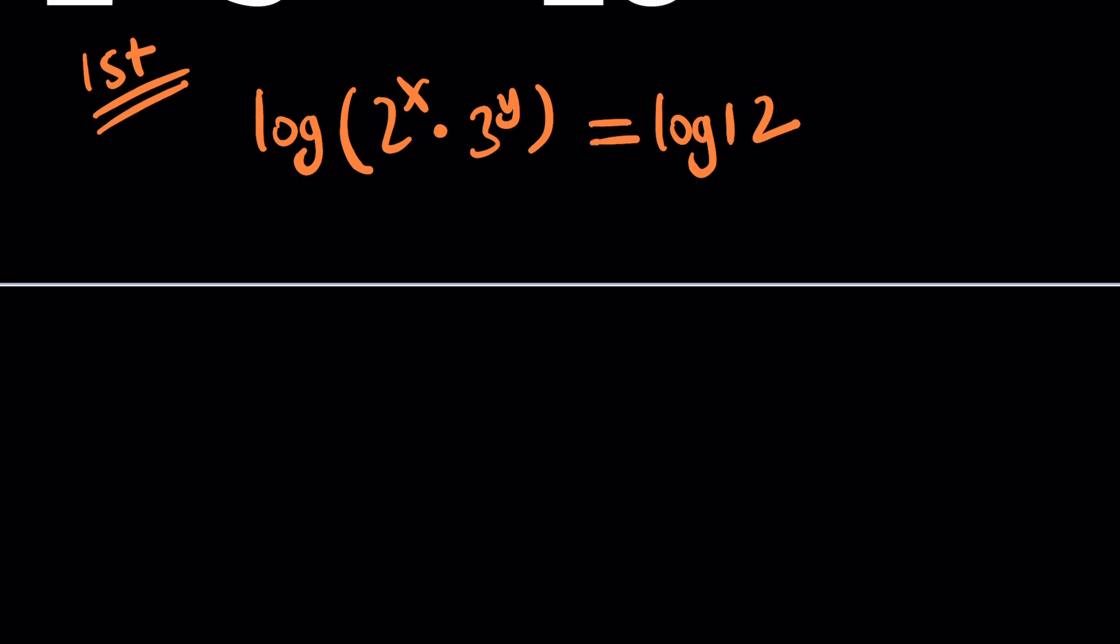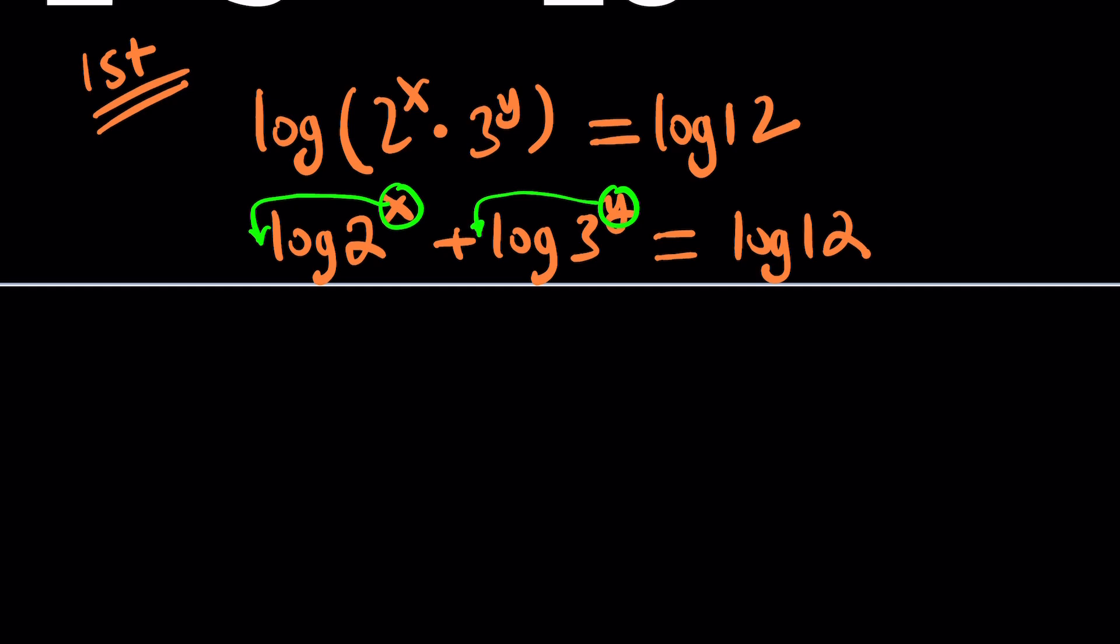Now, we can go ahead and use two properties. First of all, if you log a product, it turns into the sum of logs. So you can separate it like this. And then if you have an exponent like log something to the power something, then those powers can be brought down. So this becomes x log 2 plus y log 3 equals log 12. And why did I call this linear? Because this is linear in x and y. Because log 2 and log 3 are constants. Think of them as a and b. You get something like ax plus by, which is linear in two variables, of course.